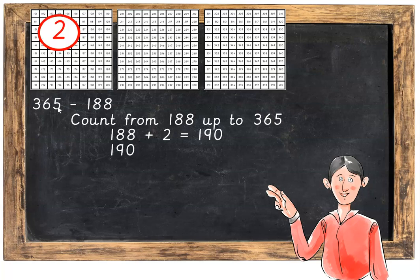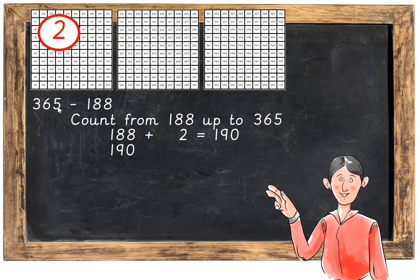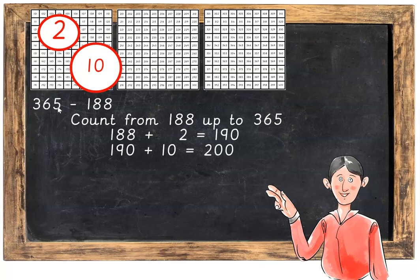Next we're going to go from 190 up to the next easy number. 190 jumping up to 200 would be a jump of 10. So 190 plus 10 is equal to 200. We've jumped 2 so far, we've jumped 10 so far.